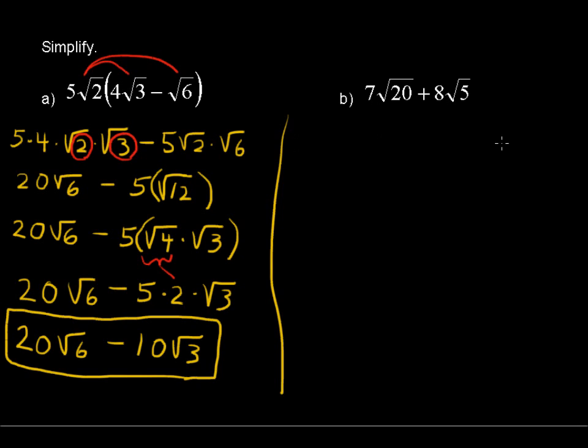Okay, question B here. 7√20 plus 8√5. We can't add 20 and 5 here, but we can simplify. That is, factor out a perfect square out of 20. So let's do that. 7 times √4 times √5 plus 8√5.